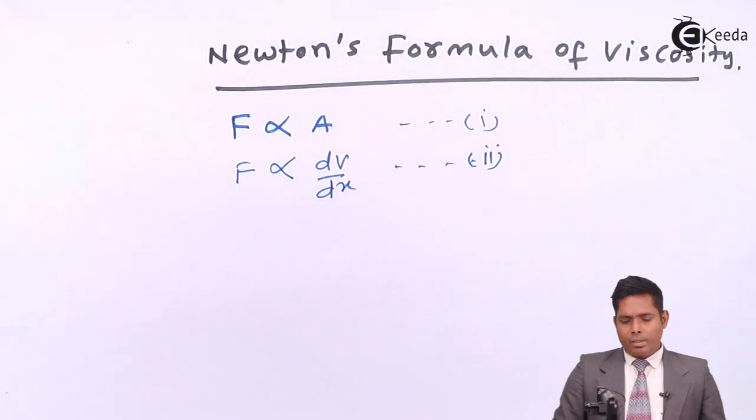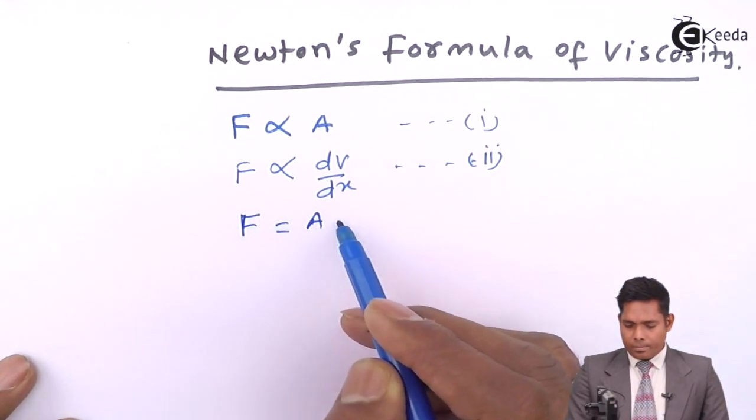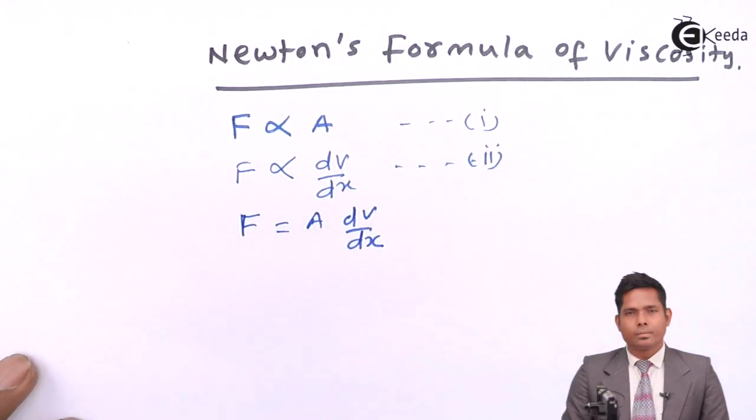Combining these two, we will have F is proportional to A dv by dx. Okay.